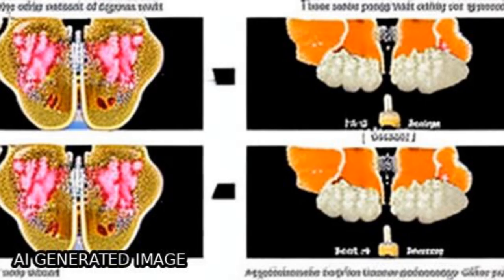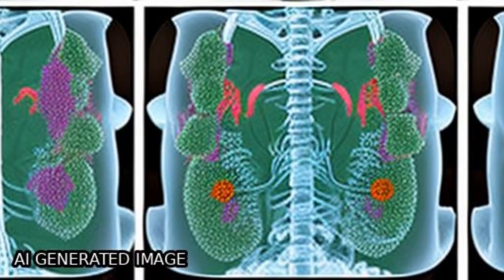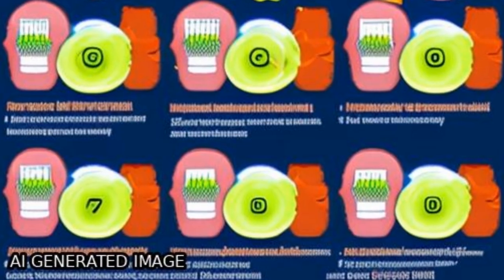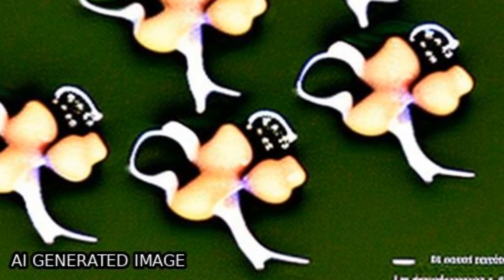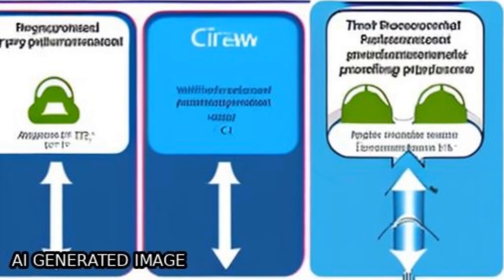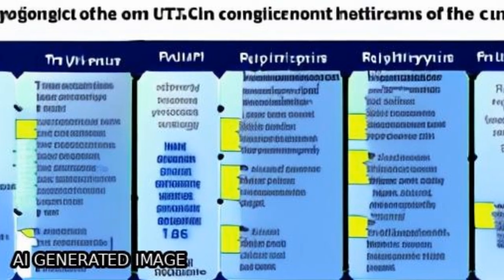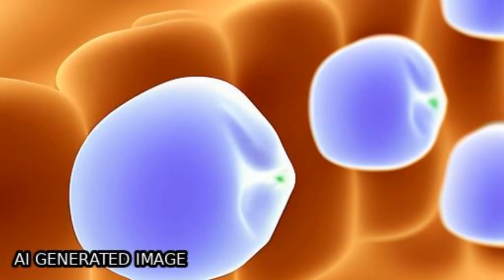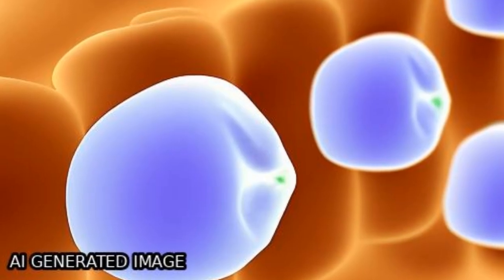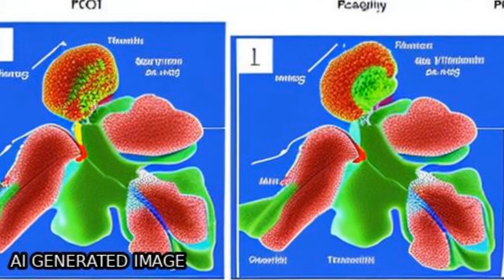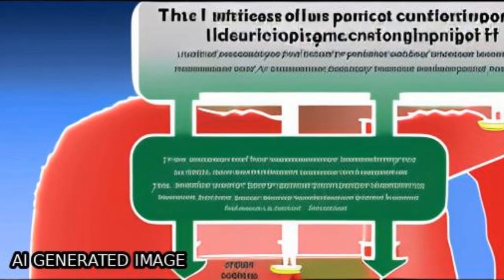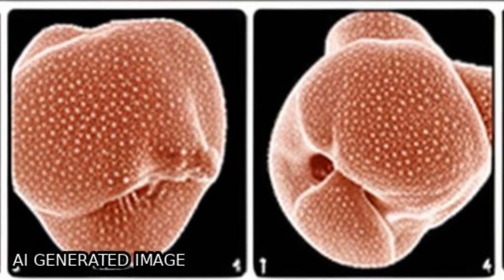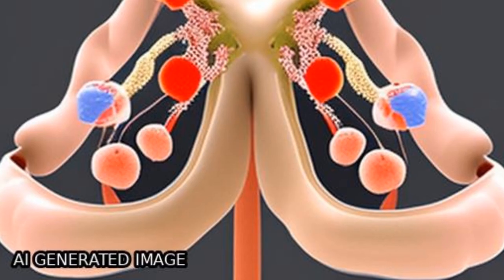The initial CT features of pulmonary mucormycosis included a single mass (n=3), consolidation (n=1), or multiple masses (n=1). There were seven pulmonary lesions in total, 3 to 7 centimeters in size, which showed a CT halo sign (n=3), reversed halo sign (n=2), or air fluid levels (n=2).